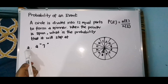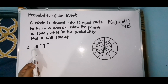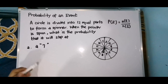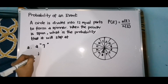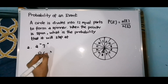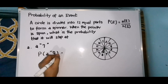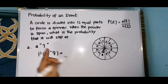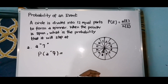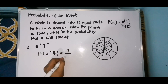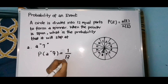So the first event is: find the probability of getting 7. The probability of getting a 7 is — there is only 1 seven in the spinner — so that is 1 over 12. So that will be our answer.